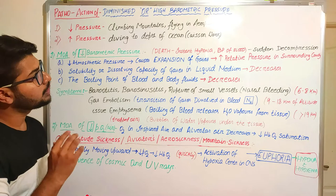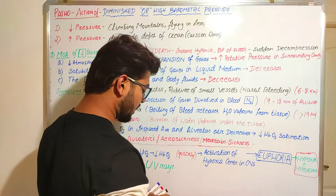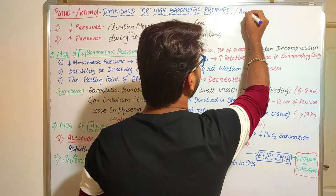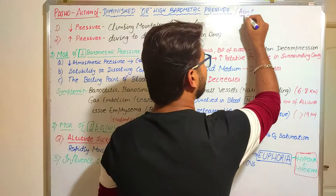In this topic, we are going to describe how the change in barometric pressure will lead to a pathological condition. First of all, what do we mean by barometric pressure? Barometric pressure is otherwise said to be atmospheric pressure — the pressure exerted by the atmosphere to the environment of the earth.